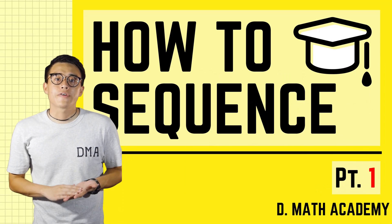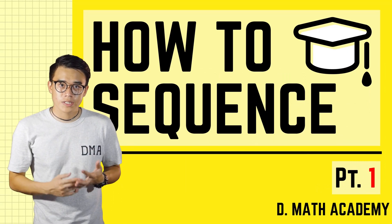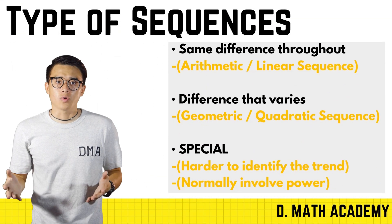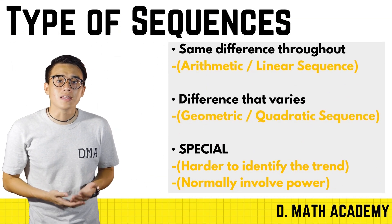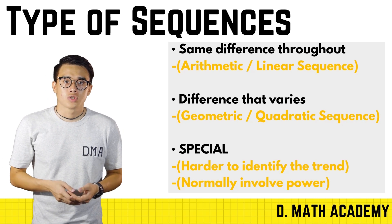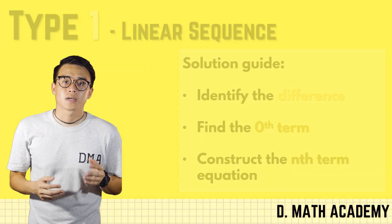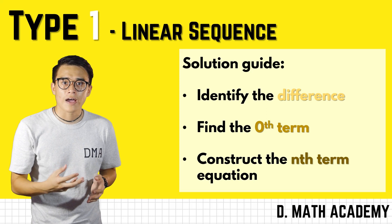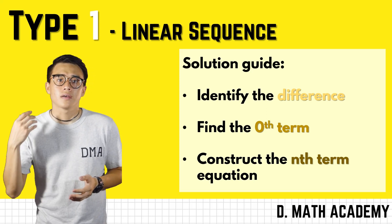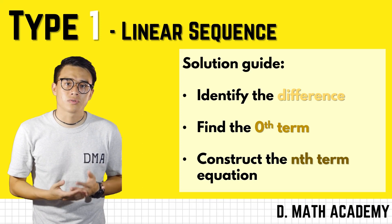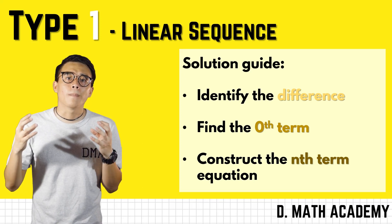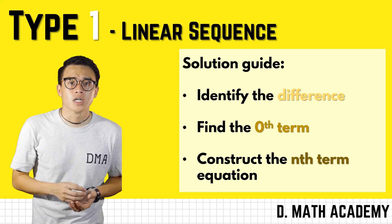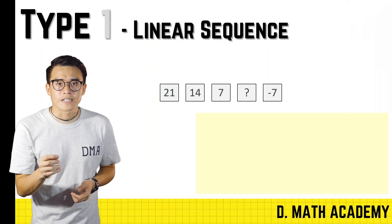The first topic we'll be covering today is sequences. I've separated it into two parts — in part one, this video, we'll be covering linear sequences and quadratic sequences. For linear sequences, there are three things we need to do: first, identify the term-by-term differences; next, find the zero term; and lastly, combine those two pieces of information to construct the n-term equation.